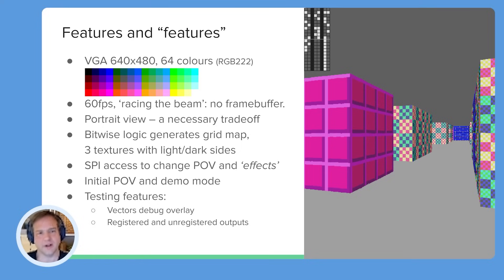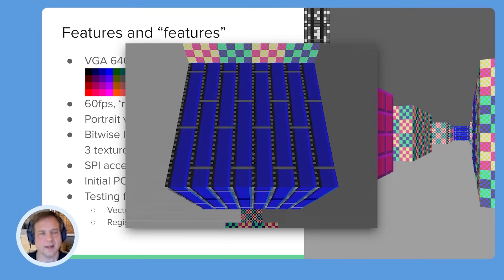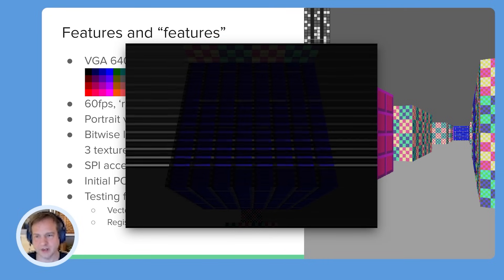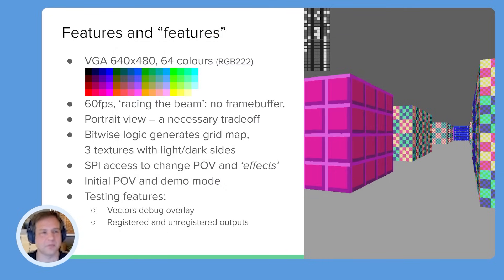The features of it are that it generates a 640 by 480 VGA display. It's 64 colors — it could be more, but we're limited in IOs. And it generates this display at a consistent 60 frames per second by racing the beam, which means that it has to calculate every line of every frame in real time and paint it directly, because we can't afford to have a frame buffer. There just isn't enough space to have RAM without going for the maximum Tiny Tapeout size.